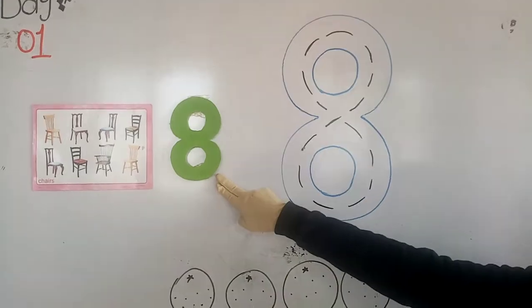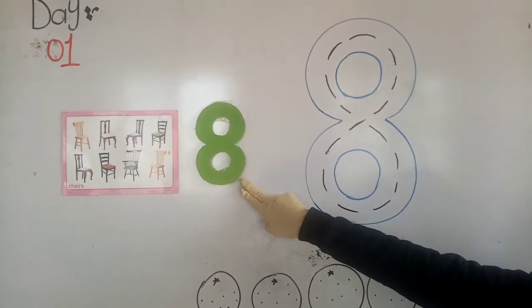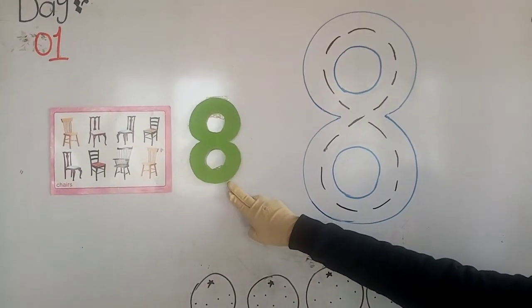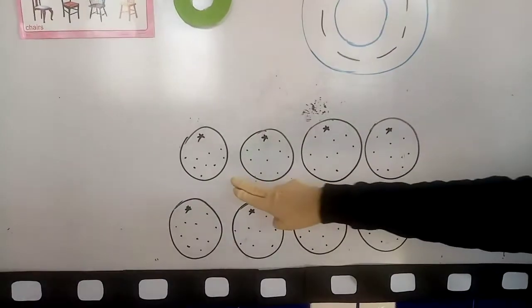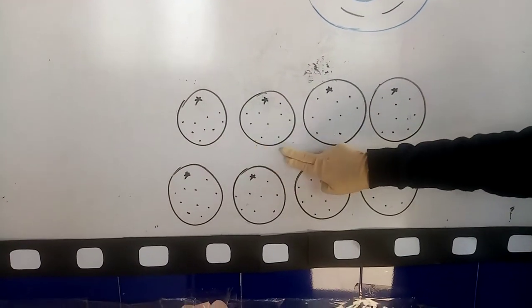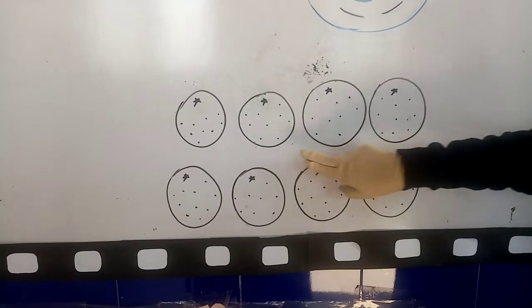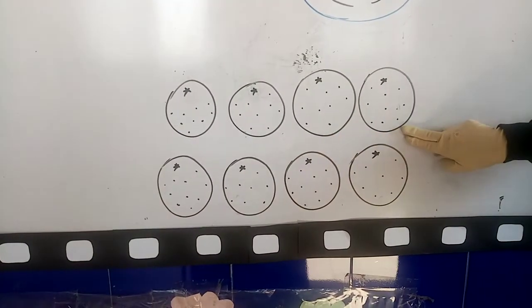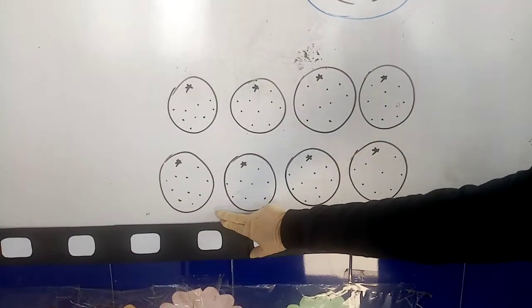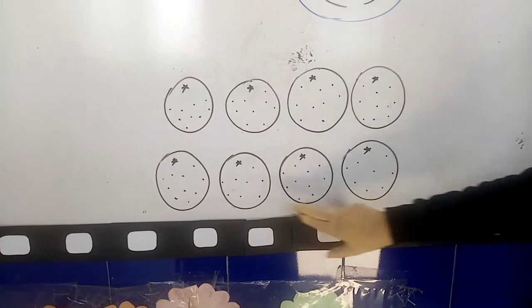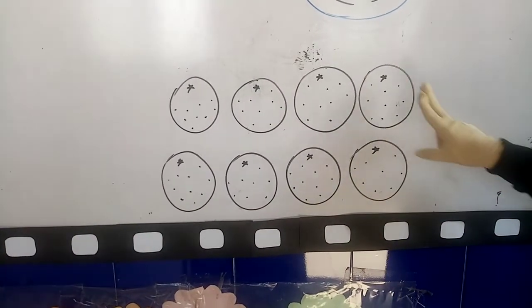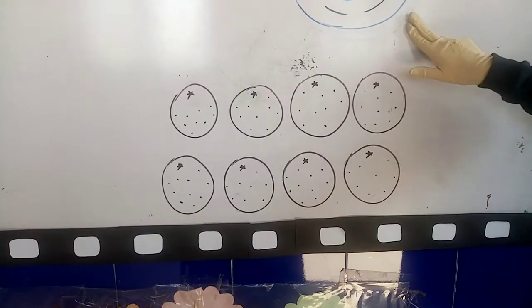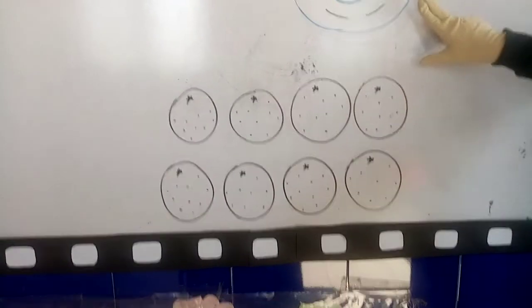Okay, count. How many oranges are here? Eight. Okay, where is it? Eight. Which number is this? Eight. Which number is this? Eight. How many oranges are here? Eight. Okay, how many oranges are here? Eight.